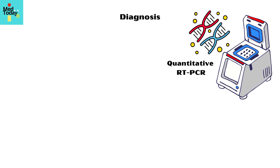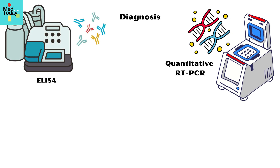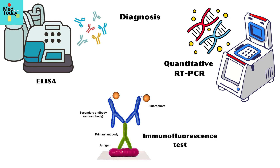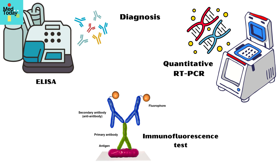Quantitative reverse transcriptase polymerase chain reaction of respiratory secretions is the most sensitive method for diagnosing human metapneumovirus infection. In addition, enzyme-linked immunoassay (ELISA) and immunofluorescence testing can also be used.